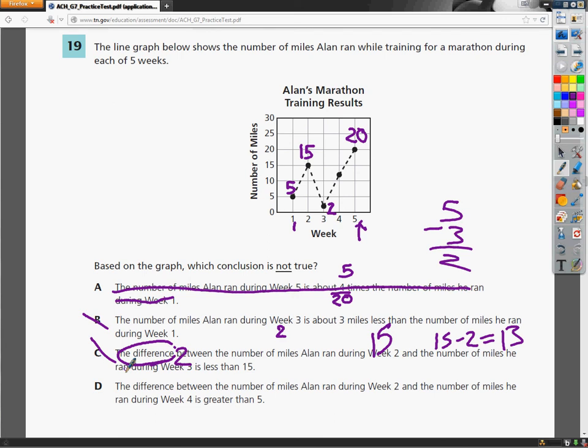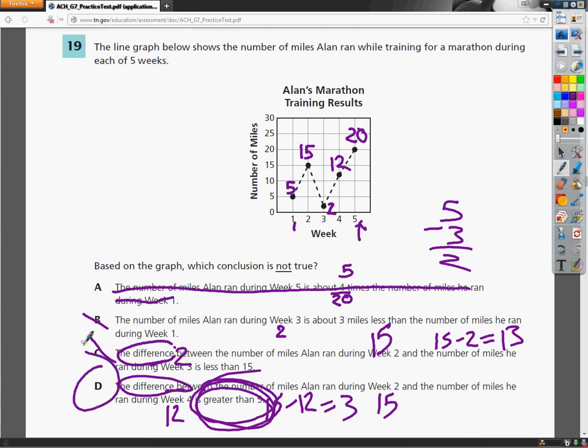So the answer that's not true is probably D, but let's check. D says the difference between the number of miles Alan ran during week 2, which is 15, and the number of miles he ran during week 4, which I forgot to mark but is somewhere around 12, is greater than 5. So I'm going to find the difference. So I do 15 minus 12, and I get 3. But it says that the answer is supposed to be greater than 5. It's not. It's just 3. So the answer that doesn't make any sense is D.